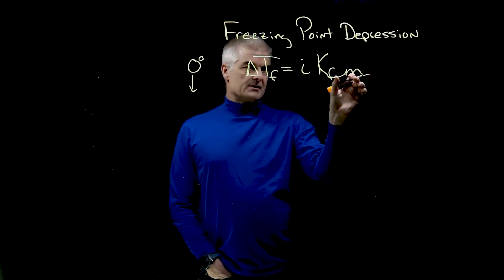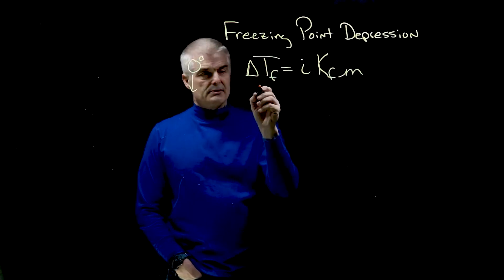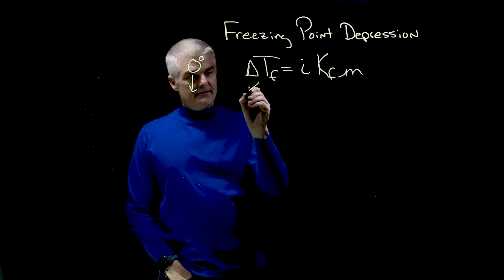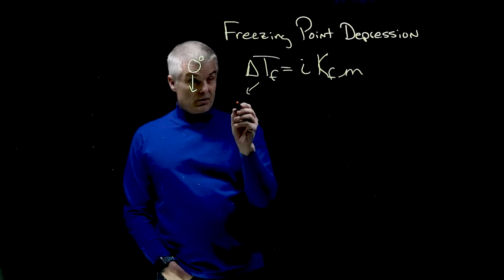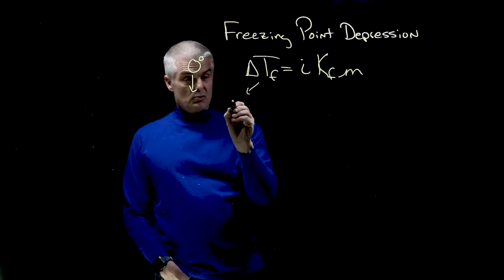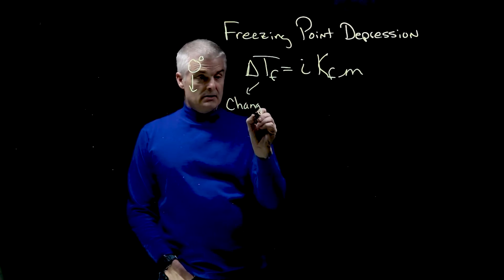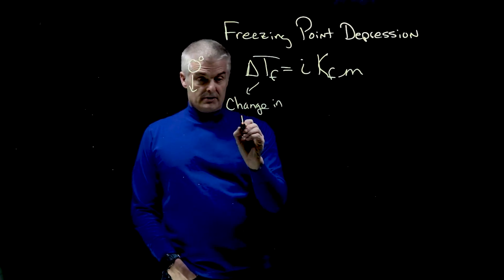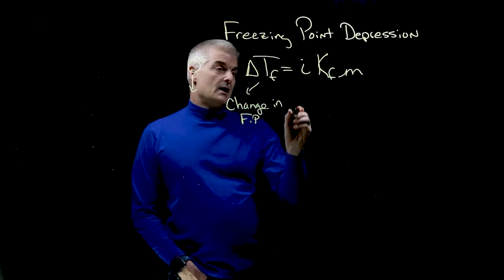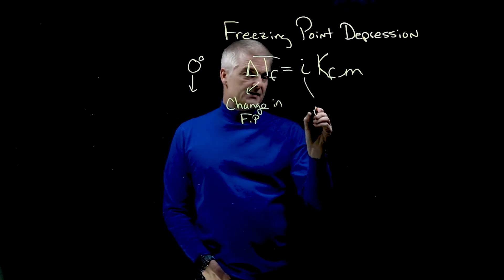Now let's talk about what each of these mean. Delta T F is the freezing point depression, the change in the freezing point. I is the ionization factor.